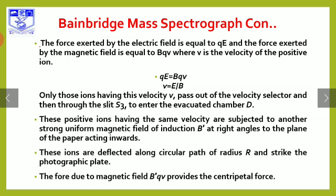These ions are deflected along a circular path of radius R and strike the photographic plate, leaving a dark line. The distance between the opening of the slit and the position of the dark line gives the diameter 2R, from which the radius R can be calculated.